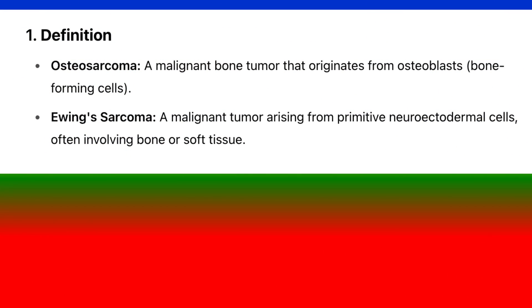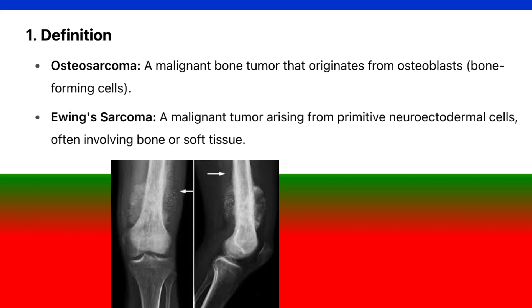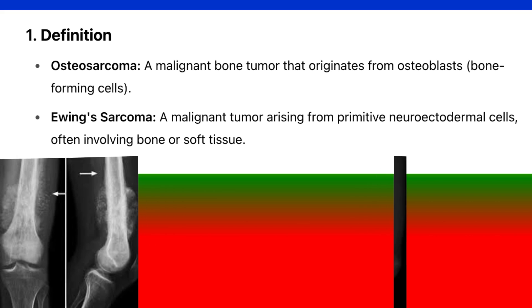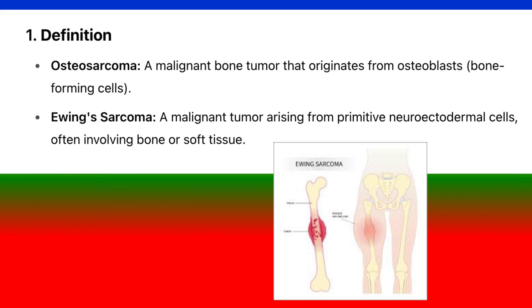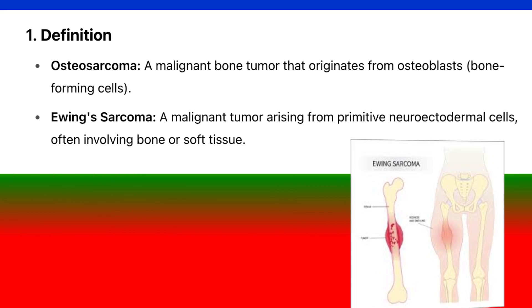1. Definition. Osteosarcoma: a malignant bone tumor that originates from osteoblasts, bone-forming cells. Ewing's sarcoma: a malignant tumor arising from primitive neuroectodermal cells, often involving bone or soft tissue.